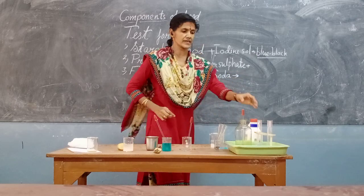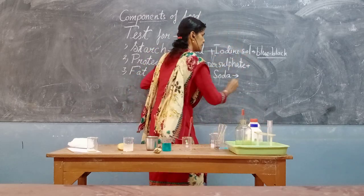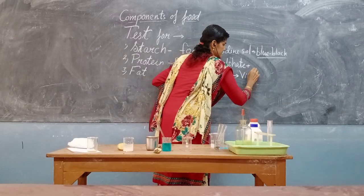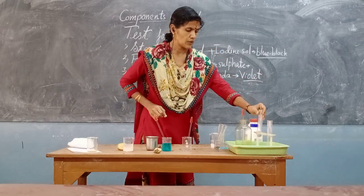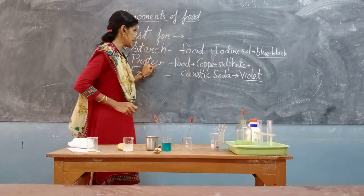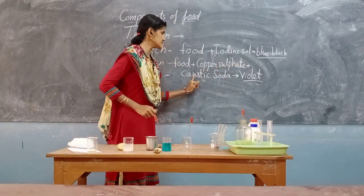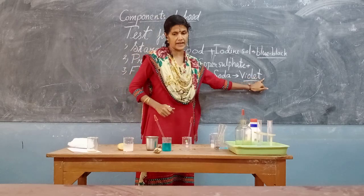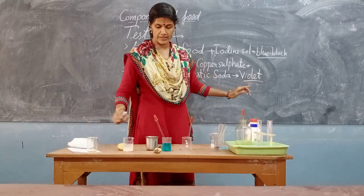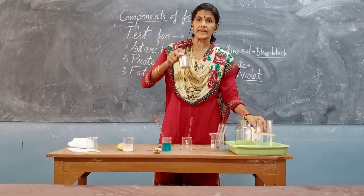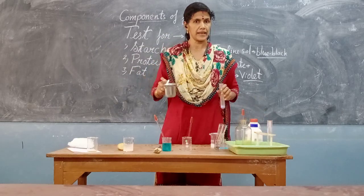It gives — what is the color here? This is violet, so here I am writing violet. Once again: protein food plus copper sulfate plus caustic soda gives violet color, which shows that protein is present in the milk.